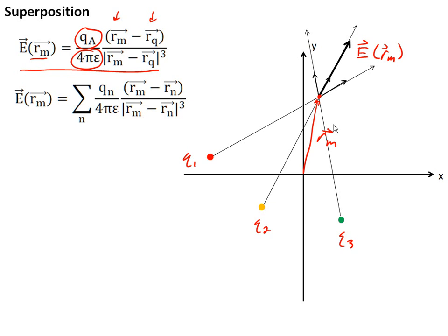And if we want to write this for many, many charges, not just three, we have a general expression that says the total electric field is just the sum of all the different charges, Q sub n, and the positions of those charges given by R sub n, so R sub 1, R sub 2, R sub 3, and so on and so forth.